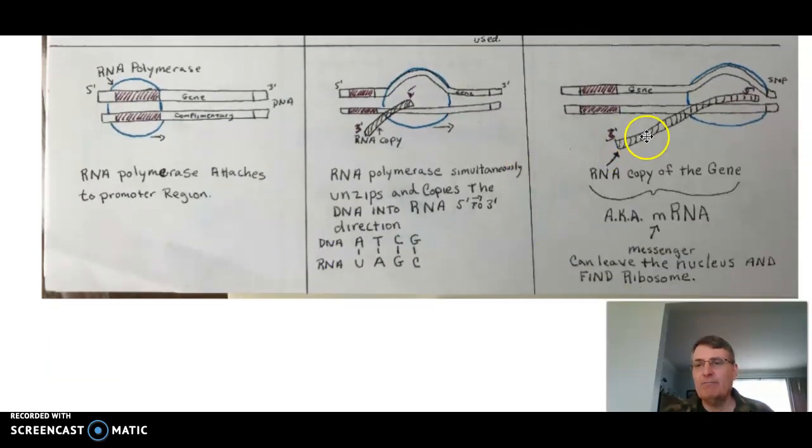Finally, the RNA polymerase is just going to keep going along, making this RNA transcript. Eventually it's going to come to a region that says stop, and the RNA polymerase will have made a copy of the gene, which is another way of saying messenger RNA or mRNA.